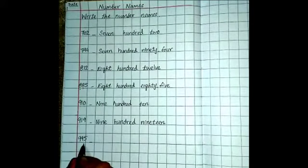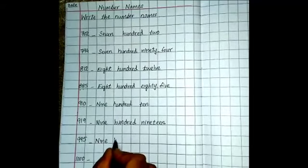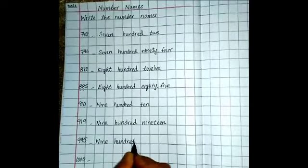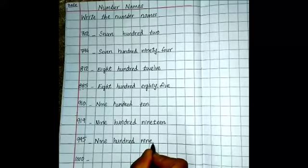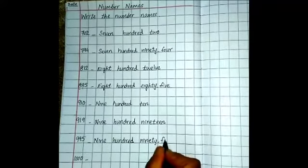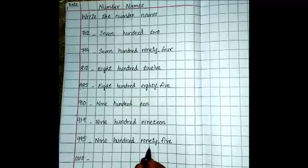Here 995. N-I-N-E-9, H-U-N-D-R-E-D-100, write here 99, N-I-N-E-T-Y-90, then write 5, F-I-V-E-5. 995.